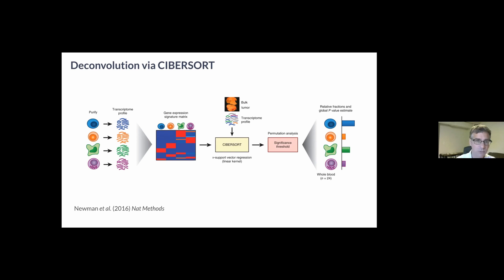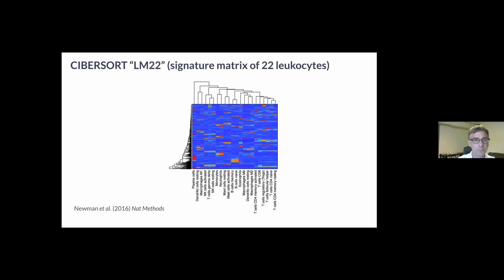By default, CIBERSORT predicts relative fractions, that is fractions that sum to one across all and only those cell types that were represented in the signature matrix. This is a point that Peter made yesterday, emphasizing the importance of having a complete signature that represents all cell types within your sample.